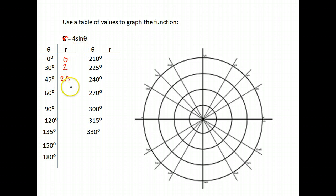The sine of 60 is 0.87 times 4 is about 3.5. I'm going to go ahead and put 3.5.